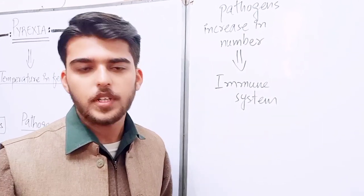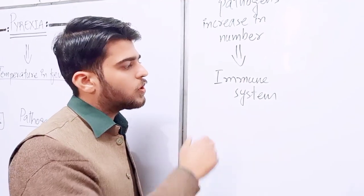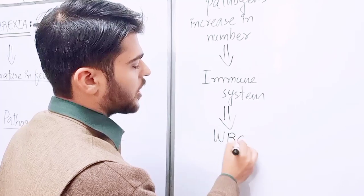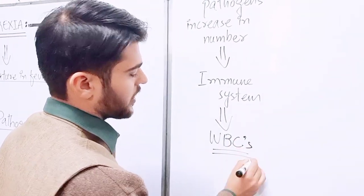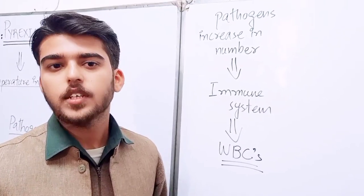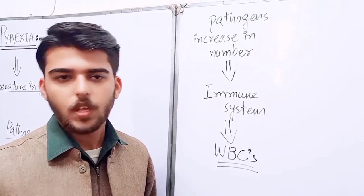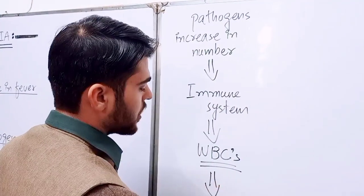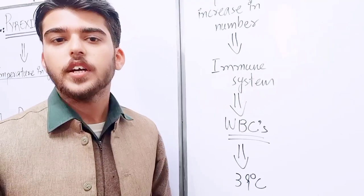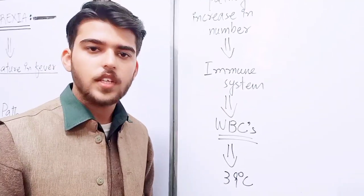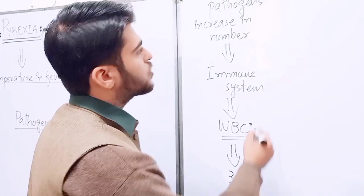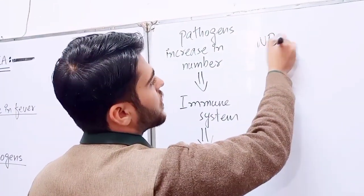Leukocytes aur viral cells ki amount bahut kam hoti hai unke sath fight karne ke liye. Toh wo hypothalamus ke paas jaate hain aur kehte hain ki temperature ko aur increase karo aur wo temperature increase hota hai 39 degree centigrade. Iski wajah se jo leukocytes hain aur viral cells unki tadad zyada hoti hai.